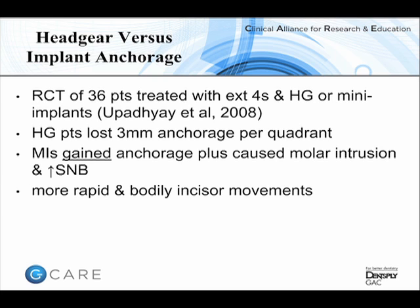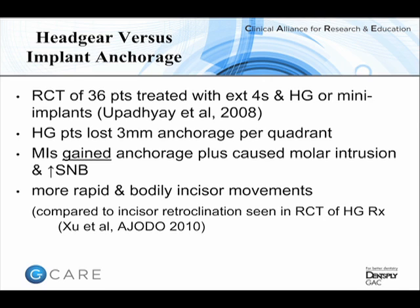What's becoming more apparent is that we're not only looking at controlling anchorage but also at better ways of affecting movement of target teeth. For instance, when retracting incisors, we have new biomechanics involving power arms, which help achieve true bodily retraction rather than just retroclination. This is notable compared to one- and two-stage retraction studied by Zura et al., published in the American Journal in 2010, where incisors retroclined substantially in both groups despite headgear anchorage — showing that incisor movement control is less well-managed without mini-implant biomechanics.